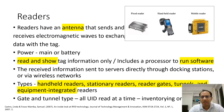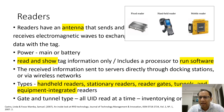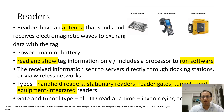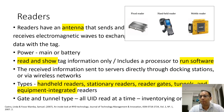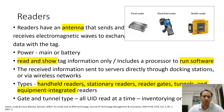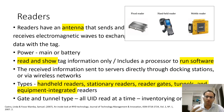Similarly, what are these readers? Readers are the ones that read the information present on the tag. They have an antenna that sends and receives electromagnetic waves to exchange data between tags. They have the power to read and show tag information only, and include a processor to run the software. They can be fixed readers, handheld readers, or mobile readers, and their antenna fetches information from data present on the tags.